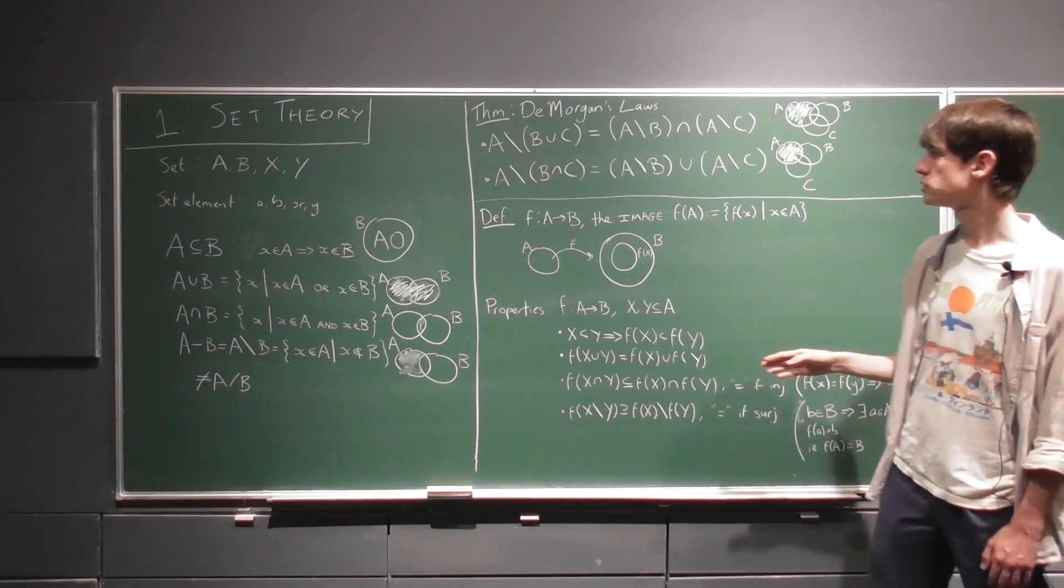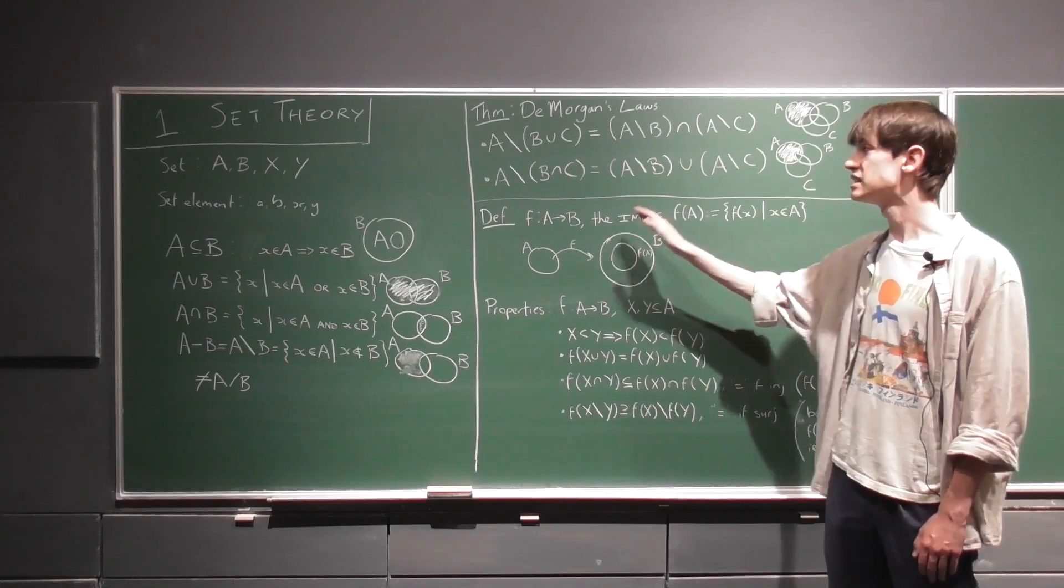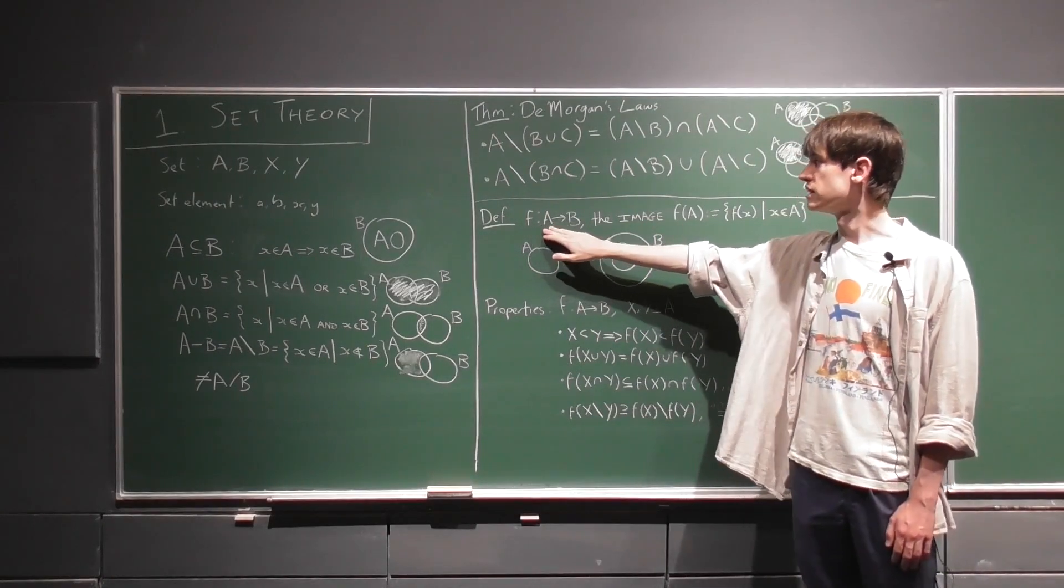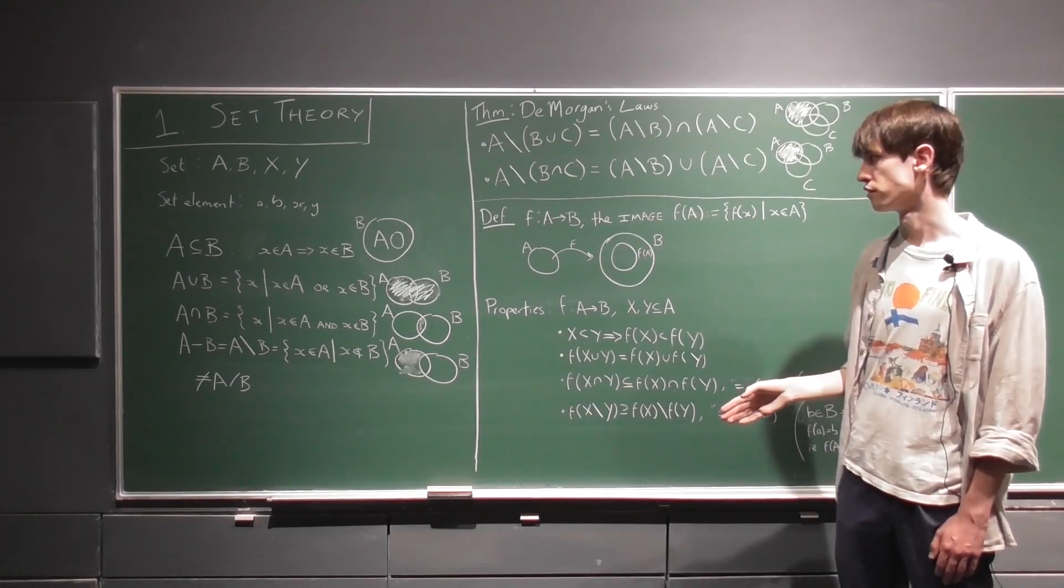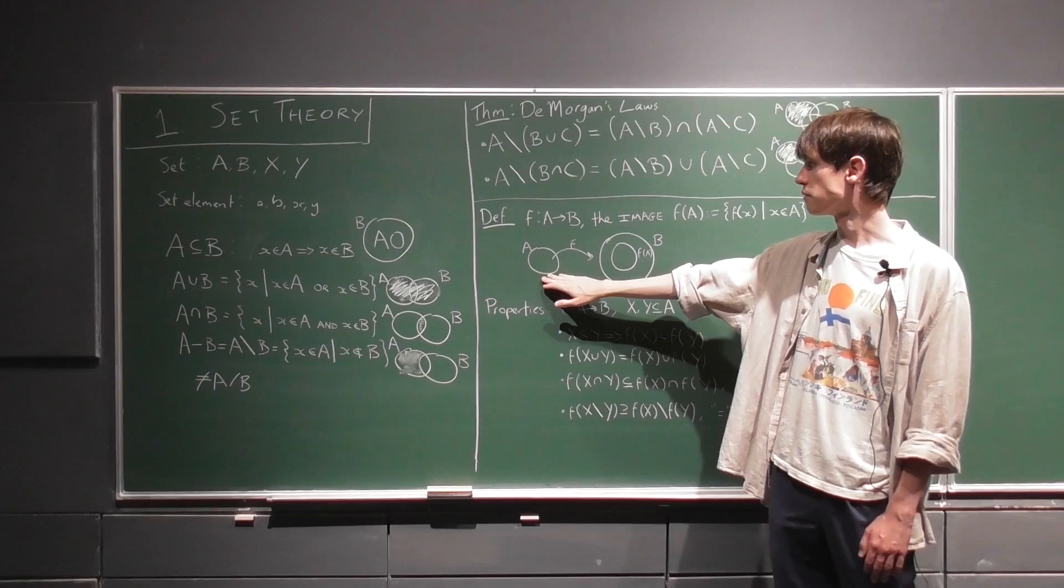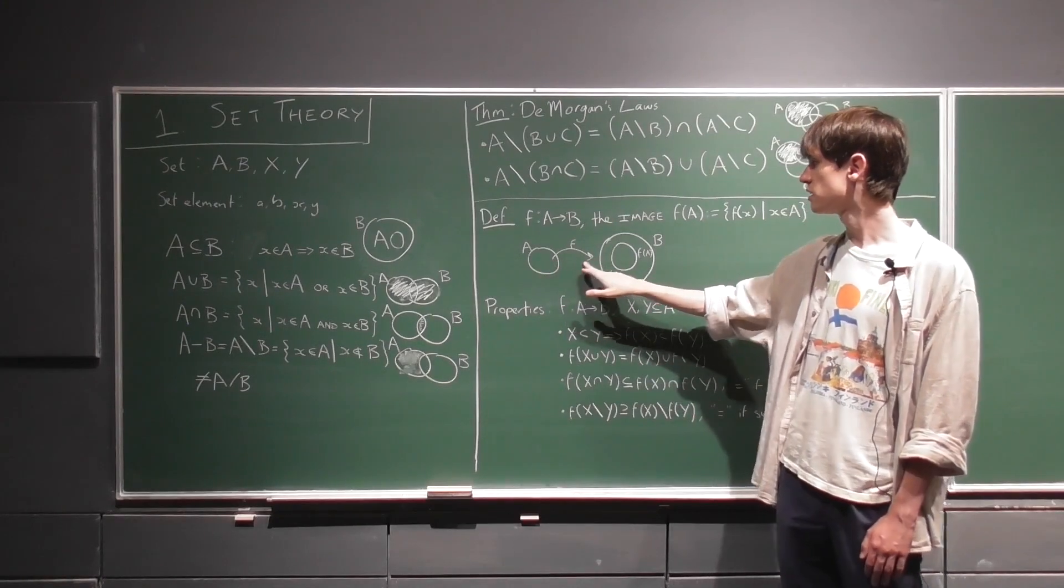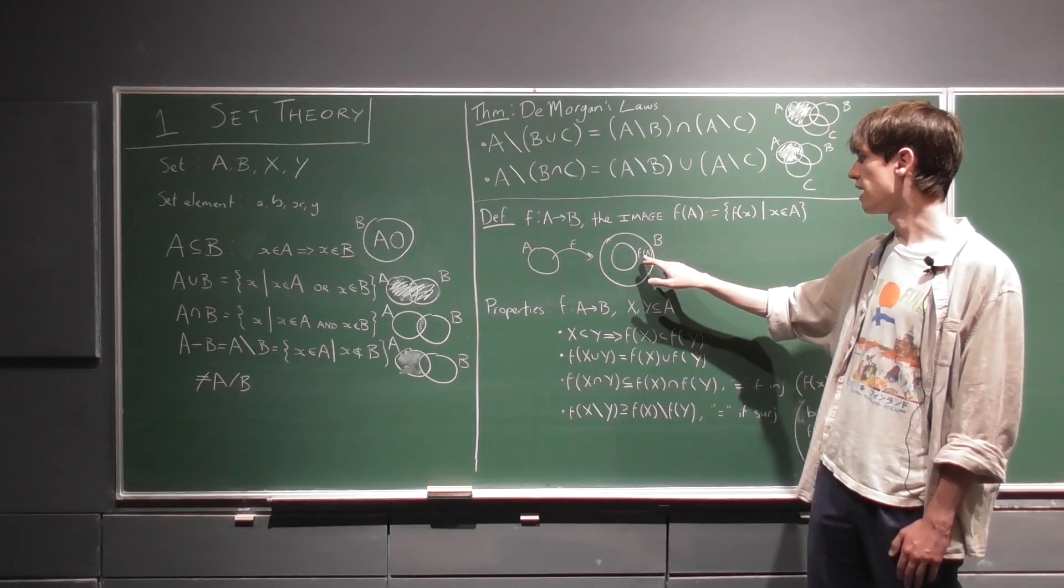This can be confusing for some students because they might think that f of A just is B, right, because of this notation here. But that doesn't hold true for all functions. So here we have a set A, and it maps under some function f to this subset of B, f of A.